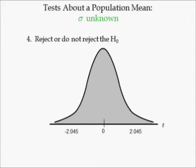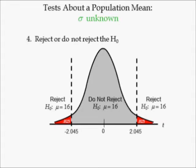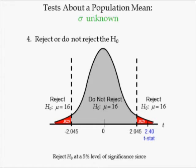In step 4, we determine whether the null hypothesis is rejected or not. Since the critical values are plus and minus 2.045, we plot them on the number line. These values define the reject and do not reject the null hypothesis regions. The area to the left of negative 2.045 is equal to half of the significance level, while the area to the right of 2.045 is equal to the other half. Since the sample data yielded a t-stat equal to 2.40, it is plotted on the number line to the right of critical value 2.045.